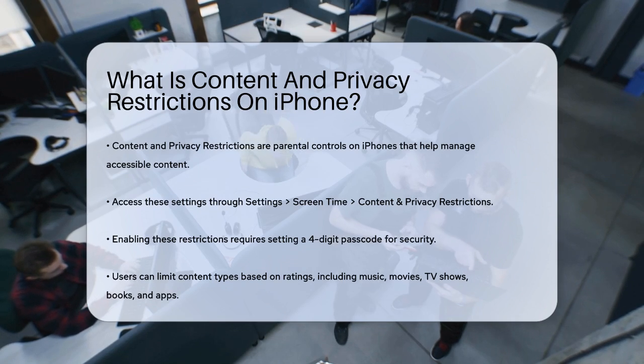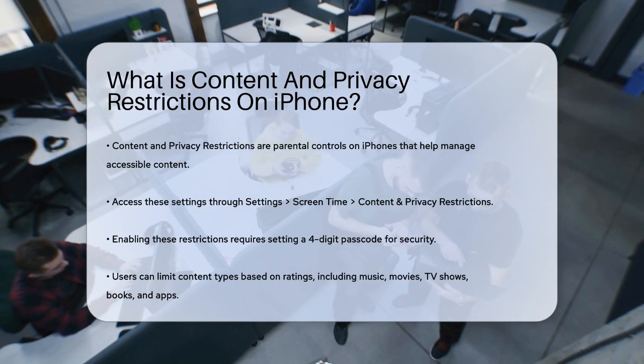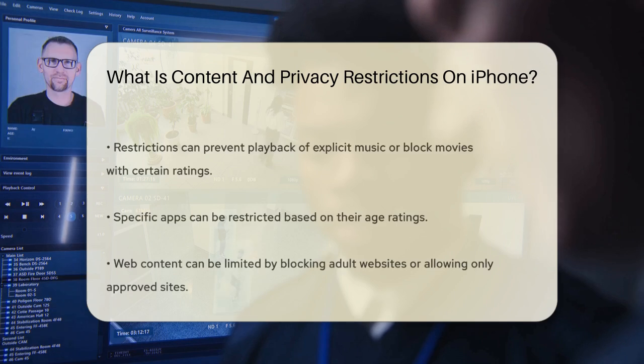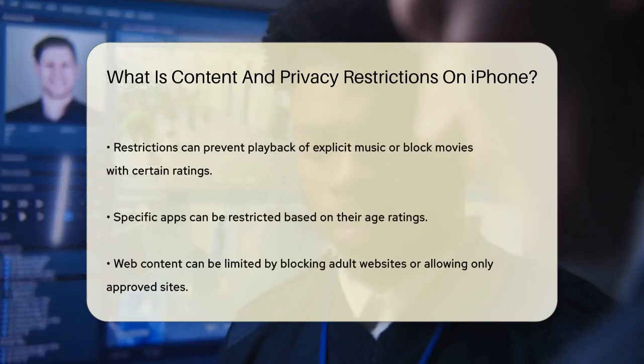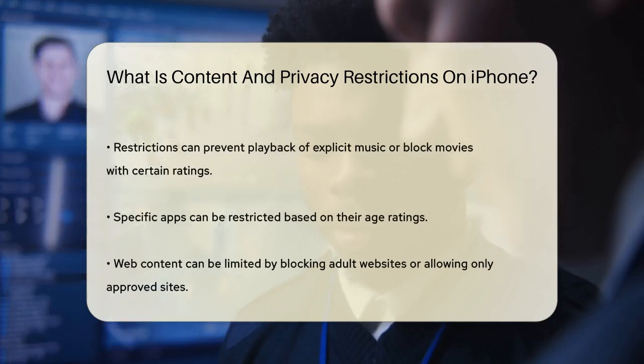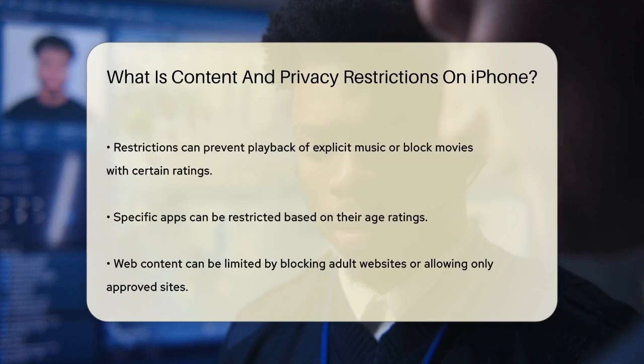When you enable content and privacy restrictions, you'll need to set up a four-digit passcode. This passcode is crucial because it prevents anyone else from changing these settings without your knowledge.